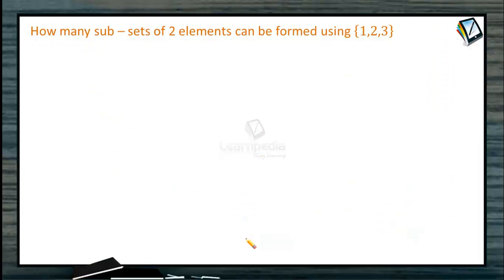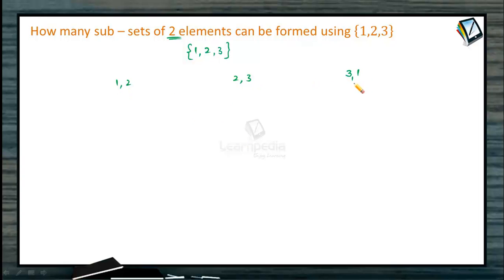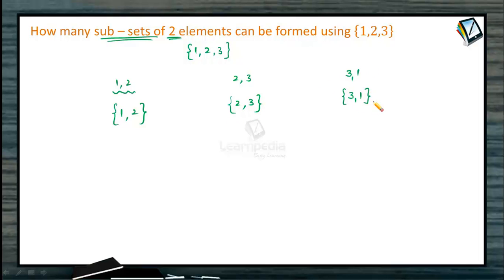Now consider a different question: how many subsets of two elements can be formed using {1, 2, 3}? The possible two-element subsets are {1, 2}, {2, 3}, and {3, 1}. Can we write {2, 1} as a separate subset? No — because {2, 1} is the same as {1, 2}.